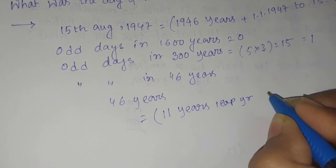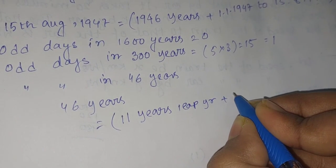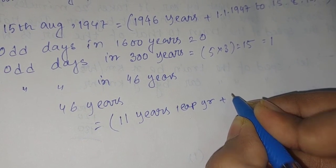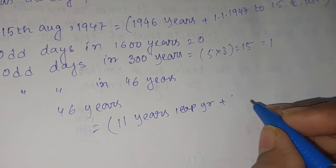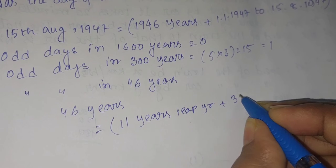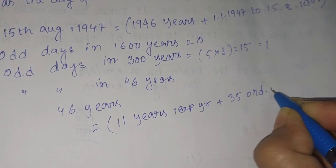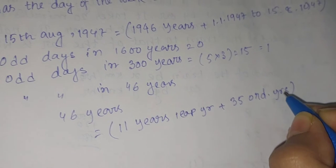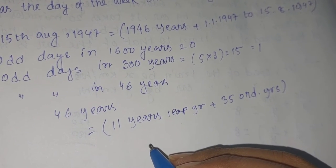So 11 leap years plus, if 11 will be cancelled out, then that will be 35 ordinary years. Now you know that for leap years...